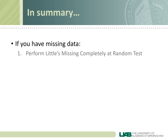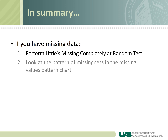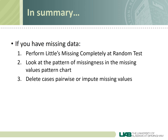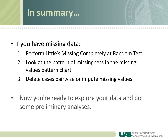In summary, if you have missing data: first, perform Little's missing completely at random test and hope that it's non-significant. Next, look at the pattern of missingness in the missing values pattern chart to see whether it's monotone or arbitrary — hopefully your pattern is arbitrary. Third, consider deleting cases pairwise if you don't have much missing data, or you might want to go on and impute missing values. Once you've done this and have a full data set, you'll be ready to explore your data and do some more exciting preliminary analyses.